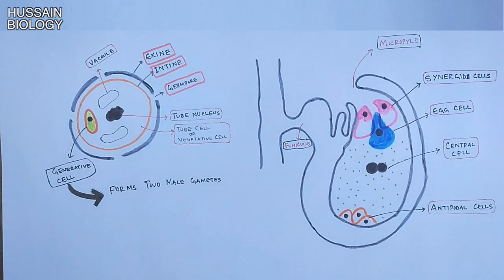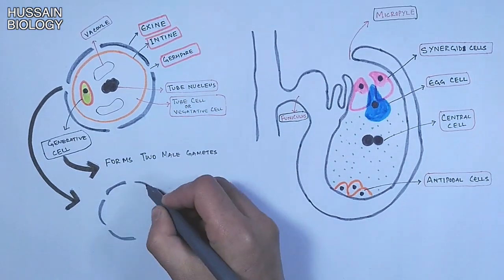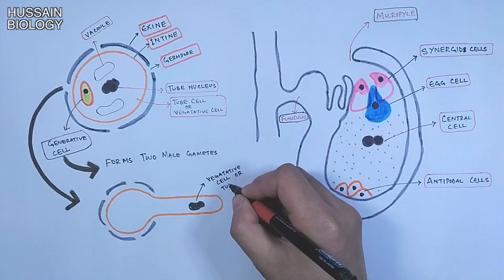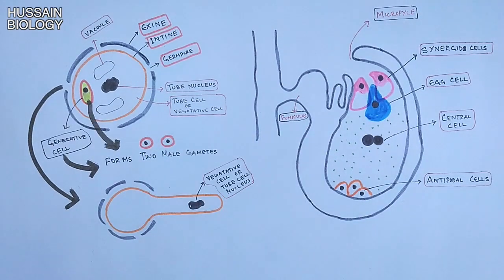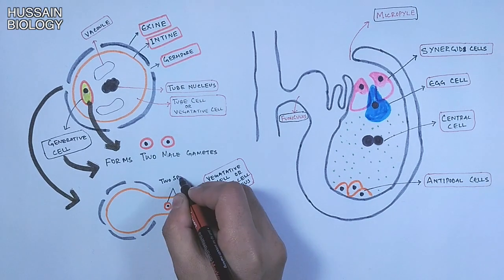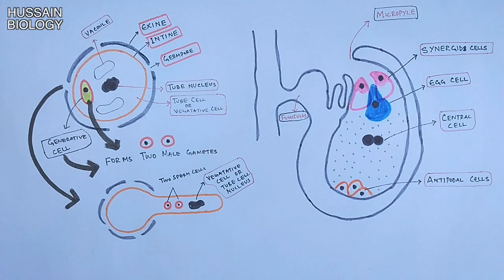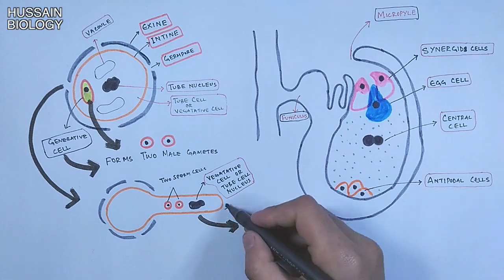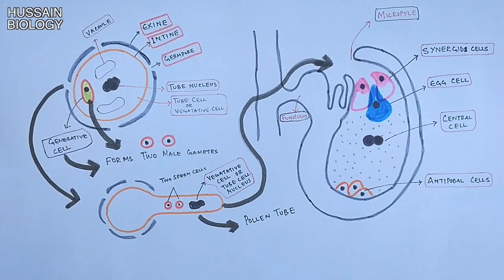The pollen is lodged onto the stigma, from where it grows into a pollen tube as shown in the diagram. At the front of the pollen tube there is a tube nucleus followed by two male gametes. The function of the tube nucleus is to guide pollen tube growth; it later disintegrates before fusion of the gametes. The pollen tube grows through the micropyle and is received by the synergid cells, where the fertilization process begins — which will be discussed in the next part of the video.